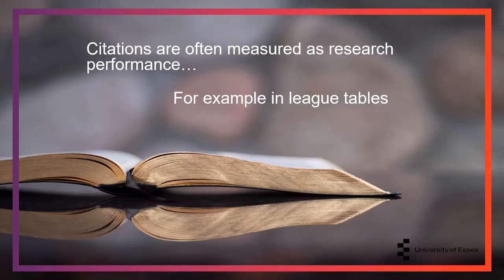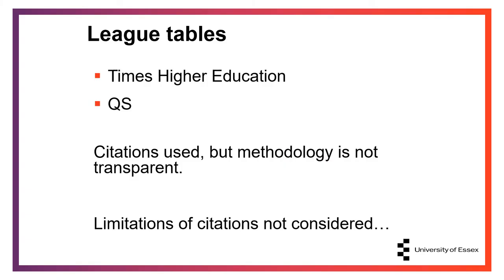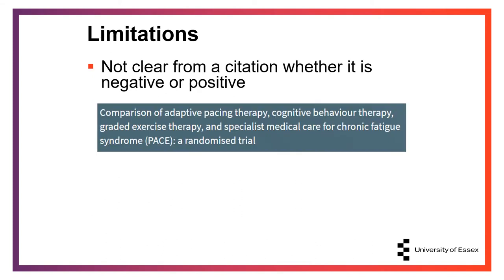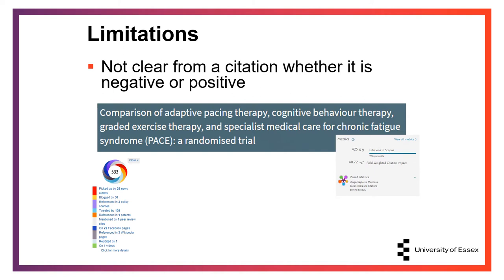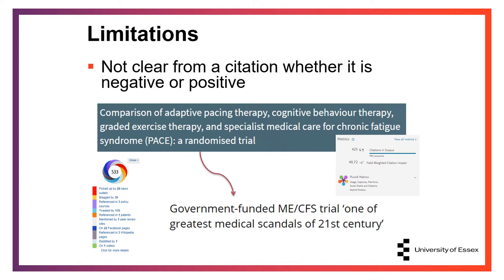One of the main reasons citations are used is to measure research performance, specifically in league tables. Both Times Higher Education and QS use citations for their league tables, and a high percentage of the end score is based on citations. However, it is not clear how the citations are used to create their scores, and these league tables do not consider the limitations of citations. On the slide is an example of a highly cited research paper with a field-weighted citation impact of 40 — meaning it was cited 40 times more than expected. However, these citations were mostly negative citations. This paper was reporting on government-funded research labeled as one of the greatest medical scandals of the 21st century, and the altmetrics for this paper are also very high as the story was picked up by the press. This example highlights how metrics alone don't always show clear judgments on research.